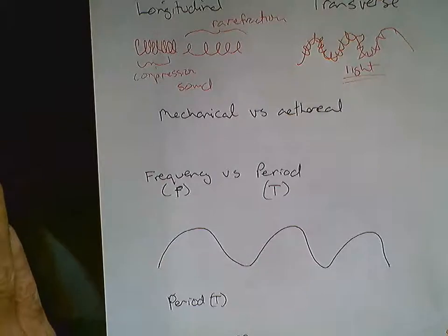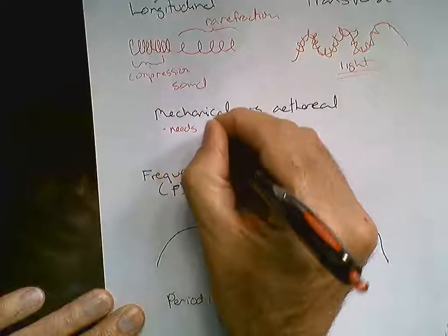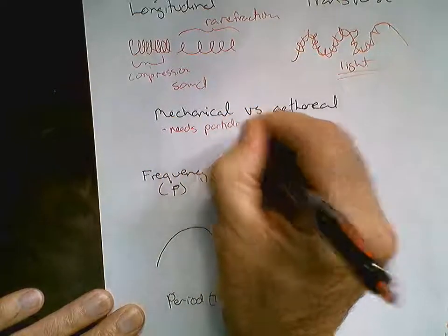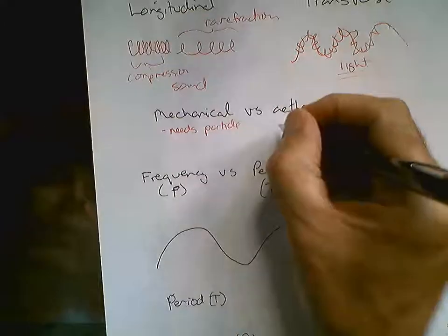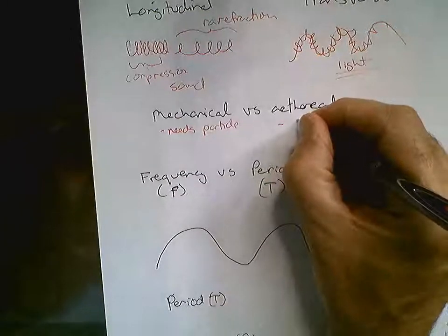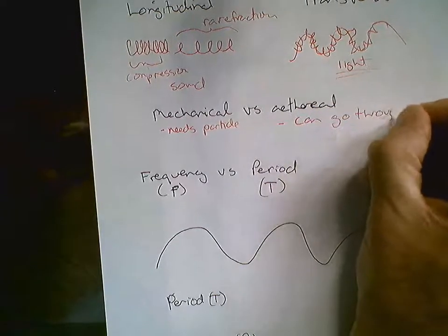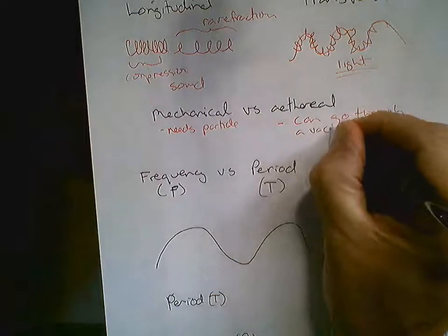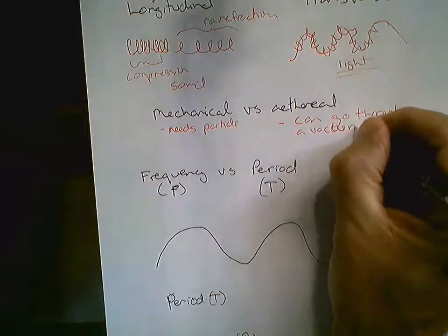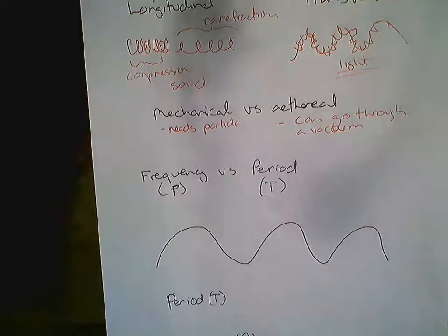Mechanical waves versus ethereal waves. A mechanical wave needs particles — picture a wave at a beach, that kind of wave needs particles to travel through. An ethereal wave like light can go through a vacuum. Vacuums don't have particles in them, so outer space is a vacuum. Light has to get from the sun to earth by going through space — it goes through a vacuum.